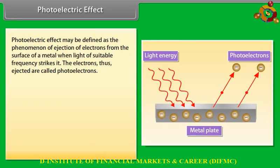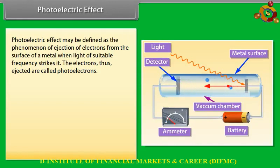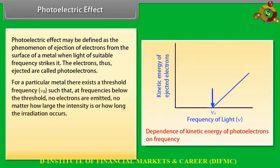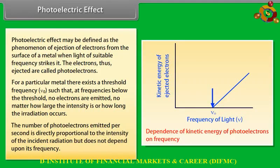Photoelectric effect: The photoelectric effect is the phenomenon of ejection of electrons from the surface of a metal when light of suitable frequency strikes it. The ejected electrons are called photoelectrons. For a particular metal, there exists a threshold frequency ν₀ such that at frequencies below the threshold, no electrons are emitted regardless of intensity or duration. The number of photoelectrons emitted per second is directly proportional to the intensity of incident radiation but does not depend on its frequency.